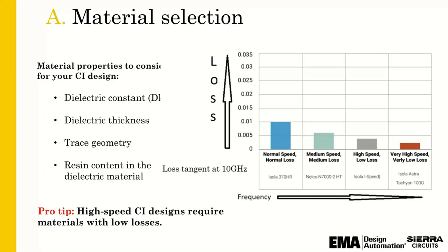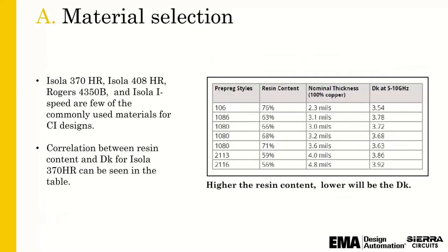Controlled impedance models are all based on the dielectric constant, the dielectric thicknesses, the trace geometries at both the top and bottom of the trace, and the resin content. Resin content is very important. Sometimes it's not specified by customers, and that's okay — the fabricator should take that into consideration when selecting the materials to use. Resin-rich materials are really good for manufacturing; they will flow into the peaks and valleys of the copper during the lamination process.